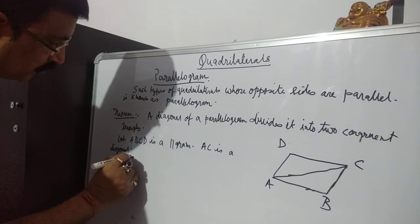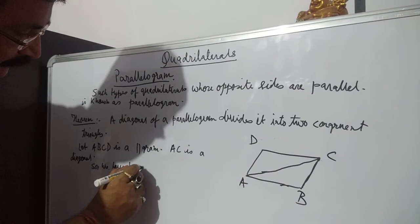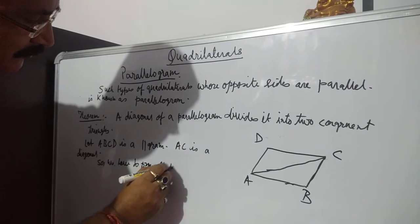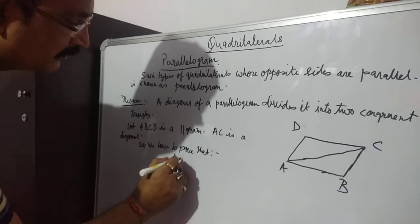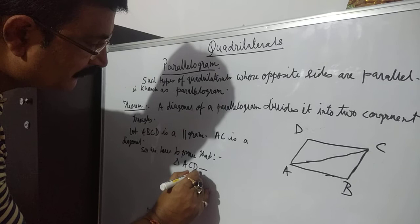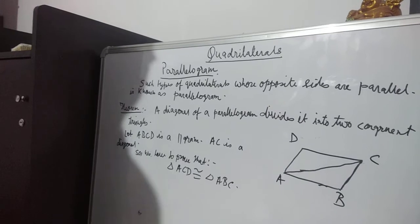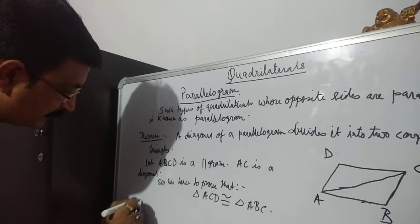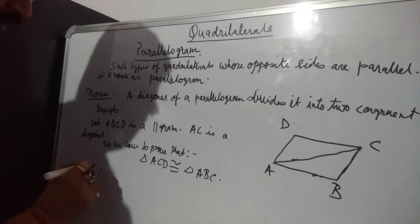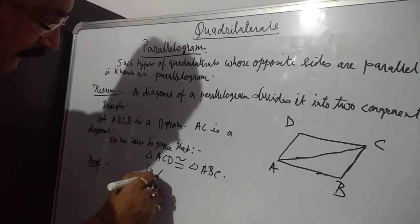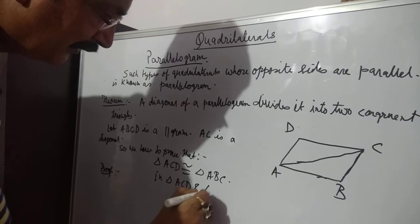We have to prove that triangle ACD is congruent to triangle ABC. Proof: In triangle ACD and triangle ABC.